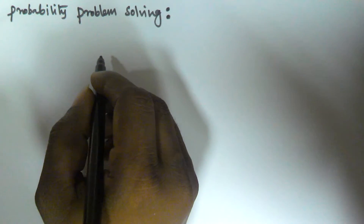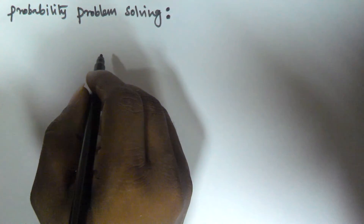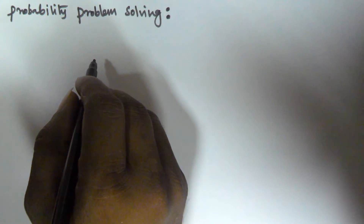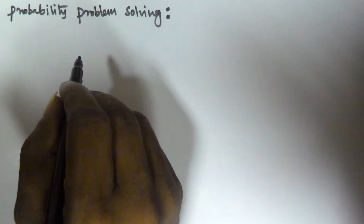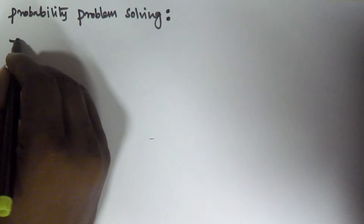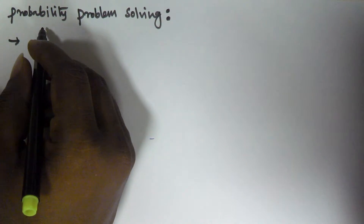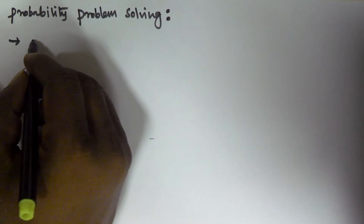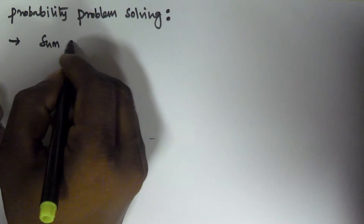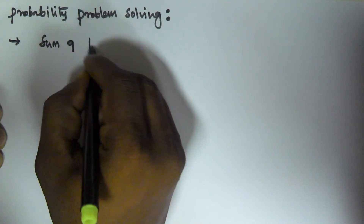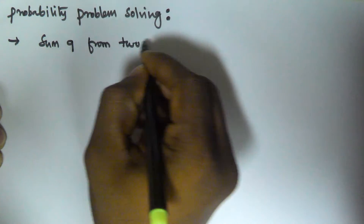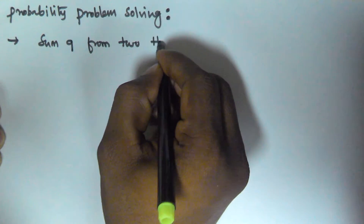Hello friends, in this video we will solve a problem related to the dice in the probability section. The question is: what is the probability of getting a sum equal to 9 from 2 throws of a dice?